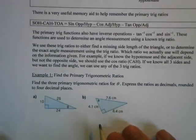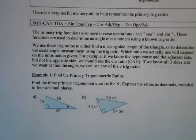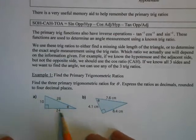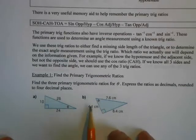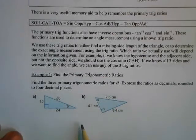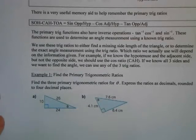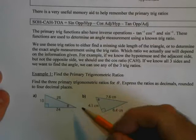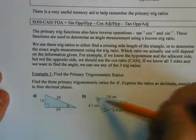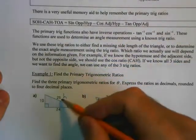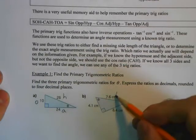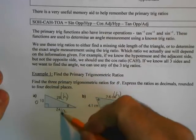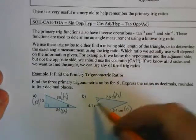Let's look at Example 1. I've got two triangles, and in both cases I have all three sides and my reference angle theta. The question says: find the three primary trig ratios for theta, expressed as decimals rounded to four decimal places. The first thing is to name the three sides. In the first triangle, the hypotenuse is opposite the 90 degrees, the opposite side is across from theta, and the third is adjacent. In the second triangle, similarly: hypotenuse opposite the 90, opposite is across from theta, and adjacent is the remaining side.